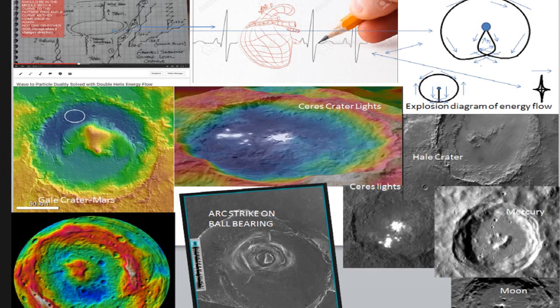Just before we do that, these are the patterns that are on Ceres and the Gale Crater, the Ceres Crater, the Hale Crater, Mercury, the Moon, and I think that one there is Mimas. This is the pattern energy forms as it moves either upwards or downwards, because it's both the same action just in reverse.